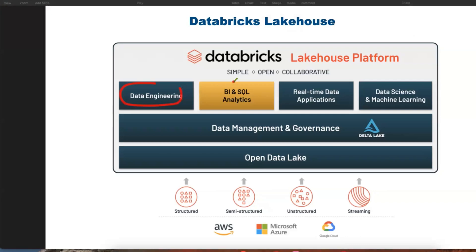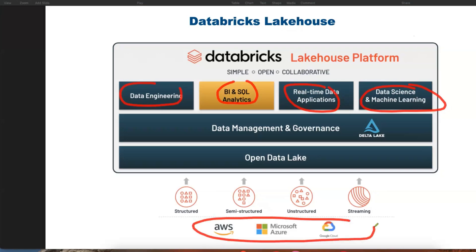There are separate components for BI and SQL analytics, separate components for real-time applications, data processing or analytics, and then data science and machine learning. The backend data is stored in a data lake, supporting multiple types of data — structured, semi-structured, and unstructured — as well as real-time streaming data. This combination is available in Databricks as a lakehouse architecture with end-to-end solutions.